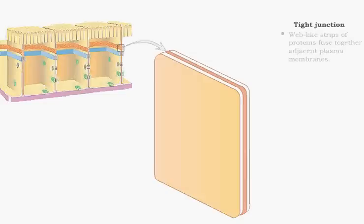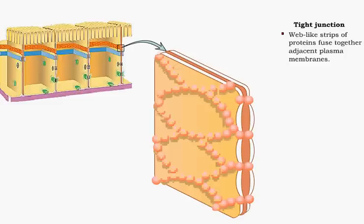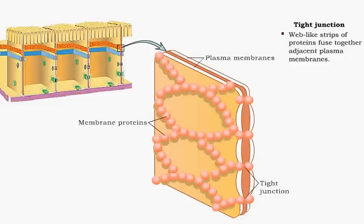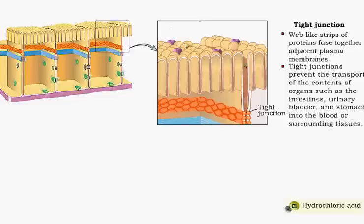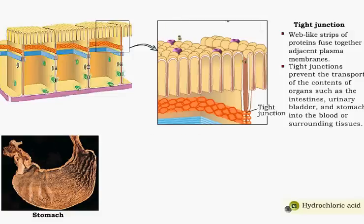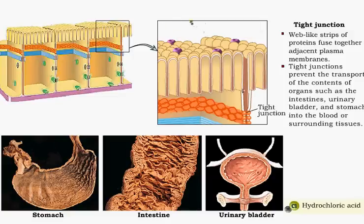The tight junction is an area where the plasma membranes of adjacent cells are fused together. These junctions protect underlying tissues from harmful substances by restricting the movement of substances like hydrochloric acid in the spaces between cells. Tight junctions are found in tissues lining the surface of organs and body cavities such as the stomach, intestines, and urinary bladder.